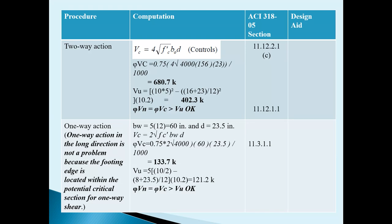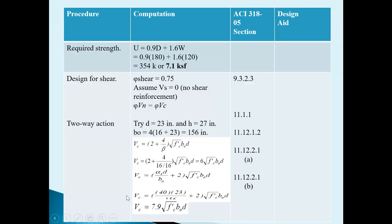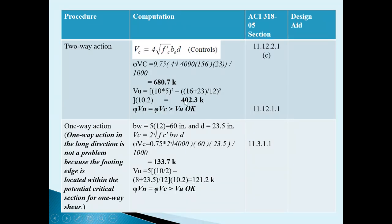One-way action in the long direction is not a problem because the footing edge is located within the critical section for one-way shear. If the footing edge were located away from that critical section, we would need to confirm one-way action in the long direction as well. In this case we don't need to calculate along the long direction. Since the footing is safe in both one-way and two-way action, we don't need to revise the thickness. If failing in any condition, we go back and revise D and H, then recheck until the design is safe in shear.